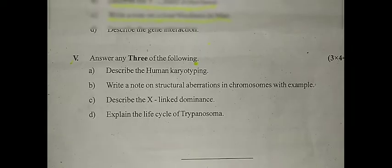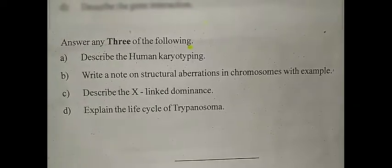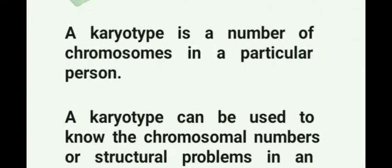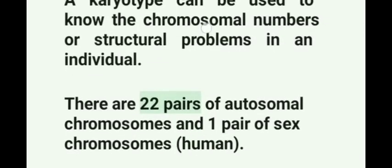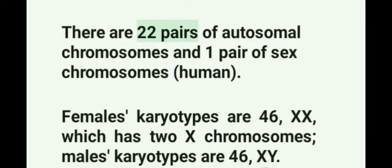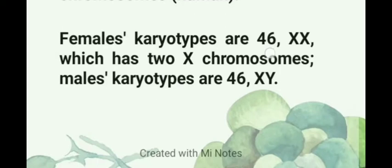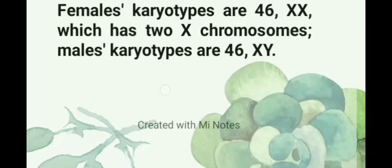Question number five: answer any three of the following, three into four marks. The first question is describe human karyotyping. A karyotype is the number of chromosomes in a particular person. A karyotype can be used to know the chromosomal numbers or structural problems in an individual. There are 22 pairs of autosomal chromosomes and one pair of sex chromosomes in humans. In humans, female karyotypes are 46XX, which has two X chromosomes. Males have karyotypes that are 46XY.